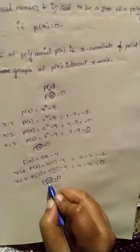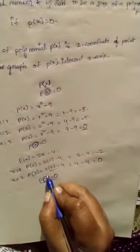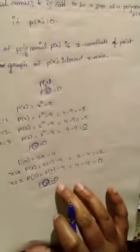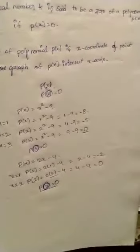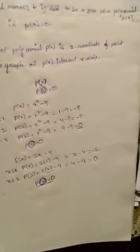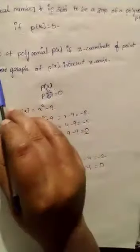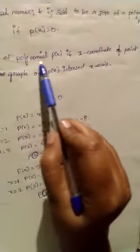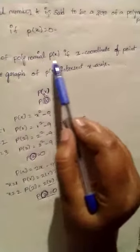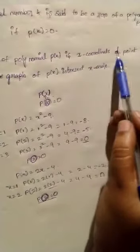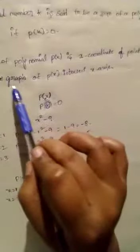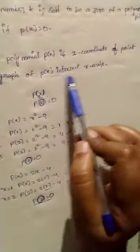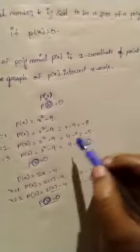The zero of the polynomial p of x is the x-coordinate of the point where the graph of p of x intersects the x-axis. Let us plot the graph to see this.